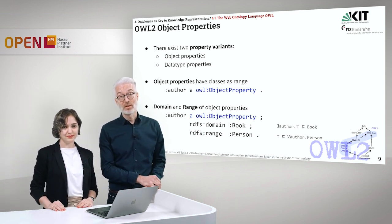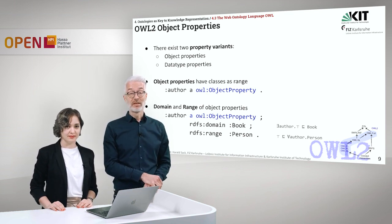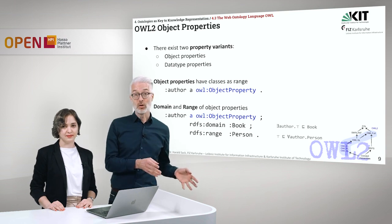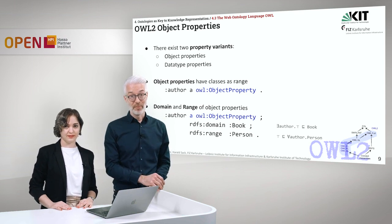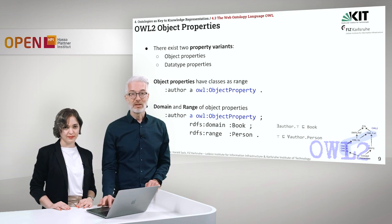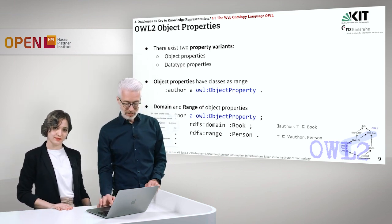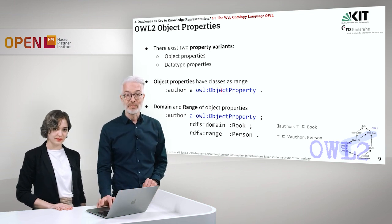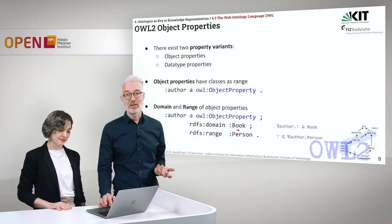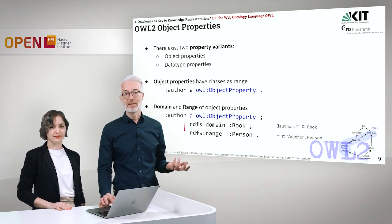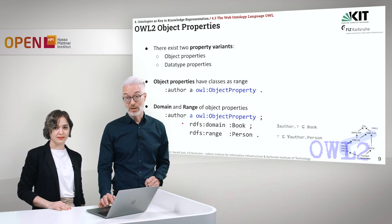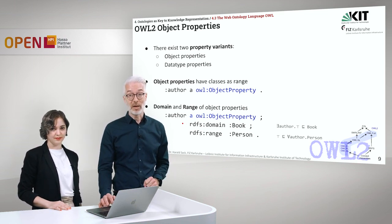For properties in OWL, we distinguish two variants: object properties, where a subject is connected to an object that is an entity, and datatype properties, where a subject is connected to a literal. Object properties have classes as their range. For example, 'author' is defined to be an object property using the keyword owl:ObjectProperty, and I define its domain as rdfs:domain Book and its range as rdfs:range Person. We simply reuse the existing RDFS keywords, since no harm is done semantically.